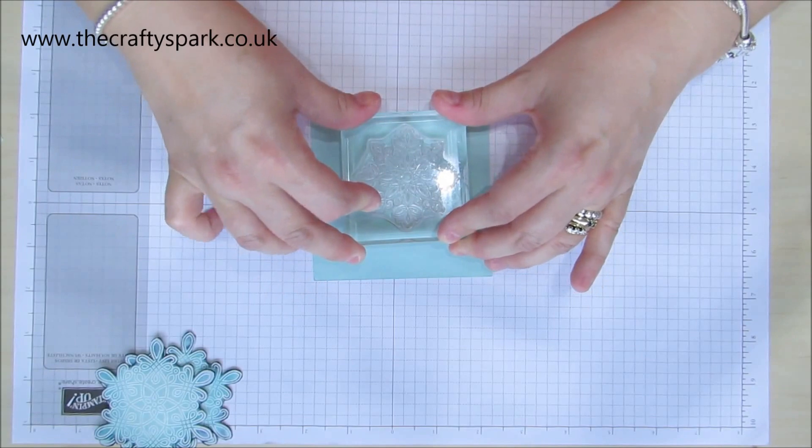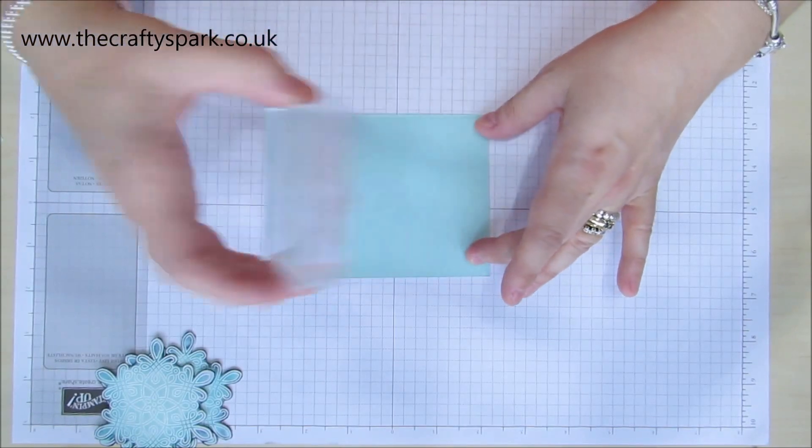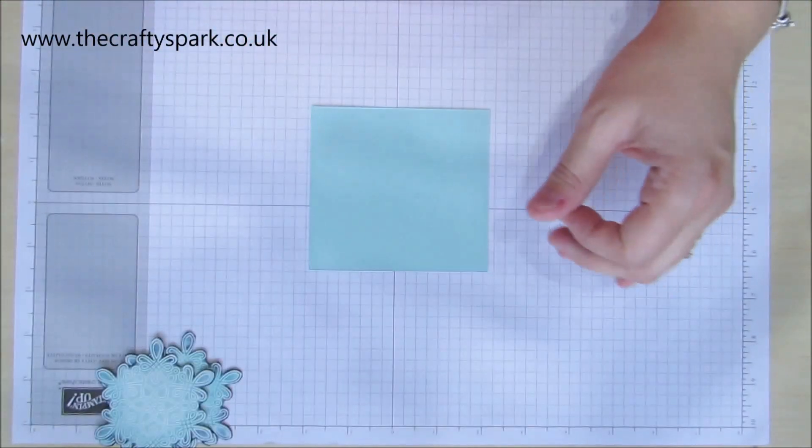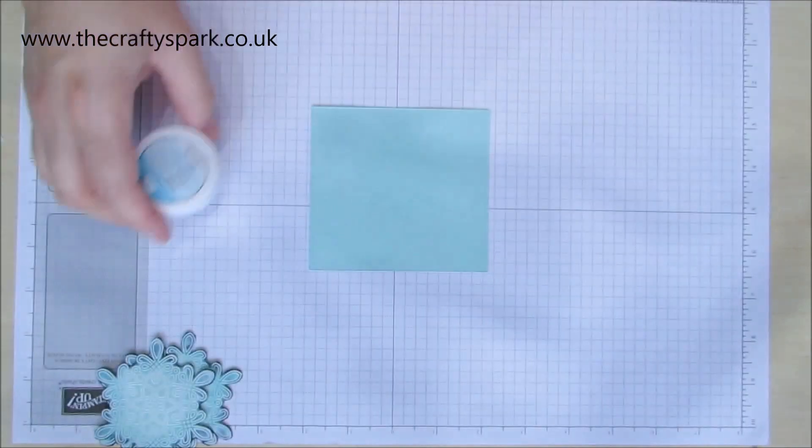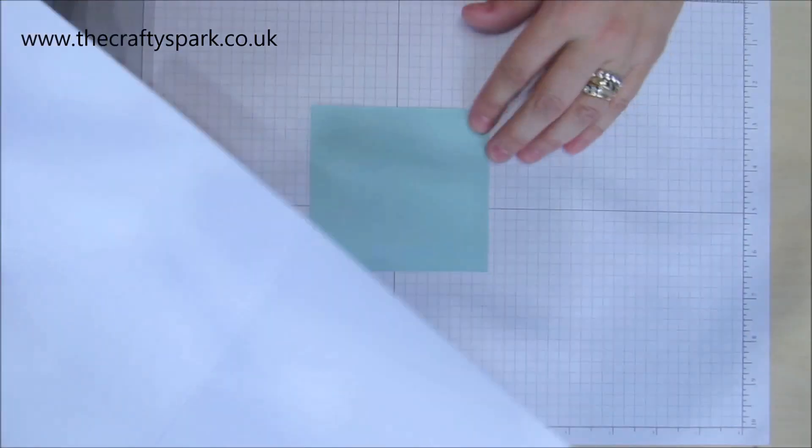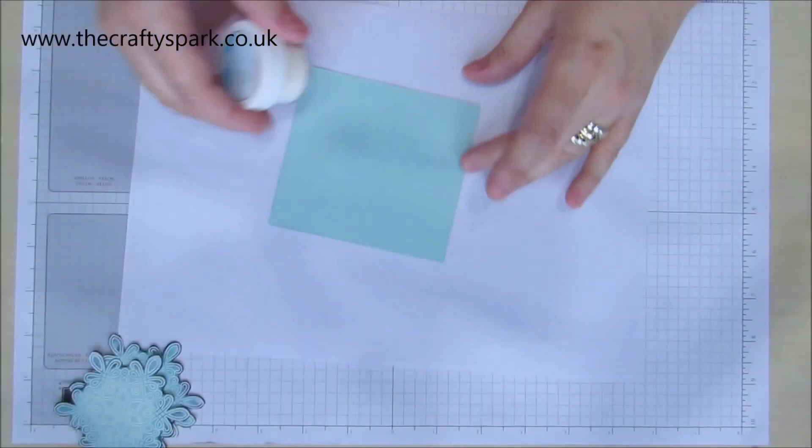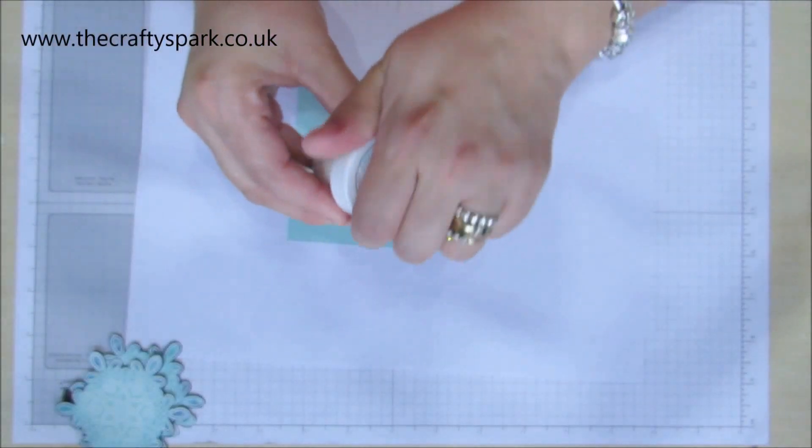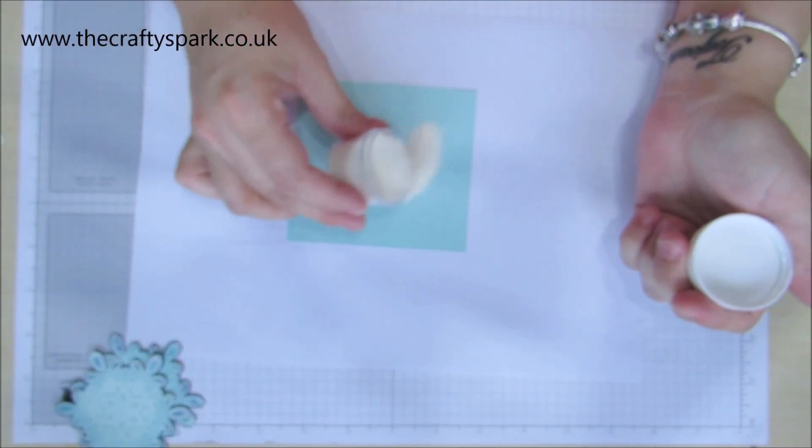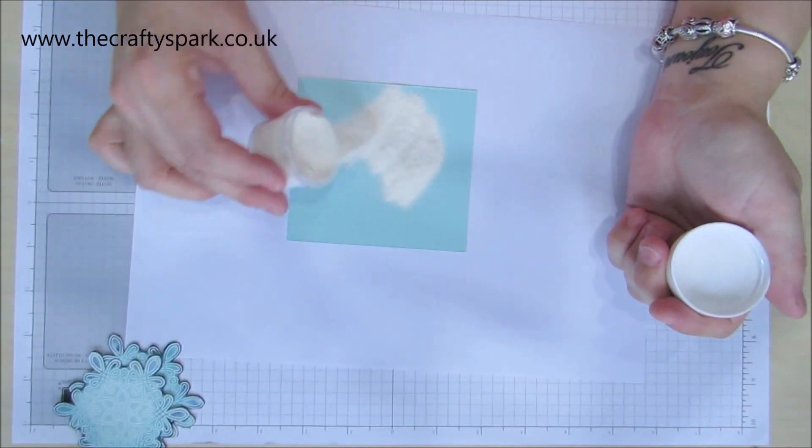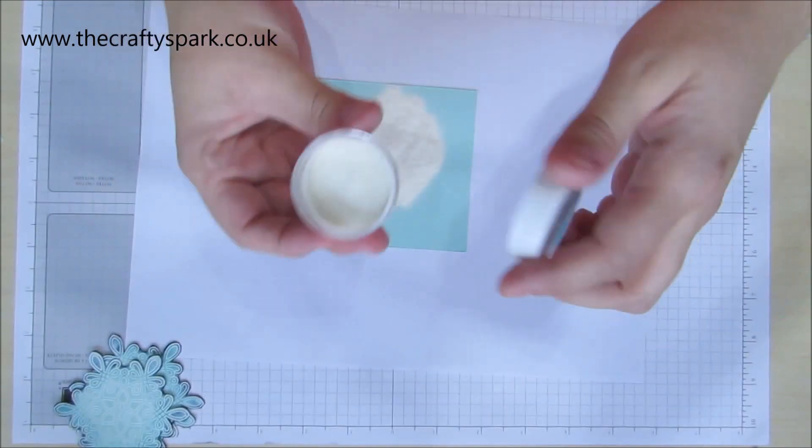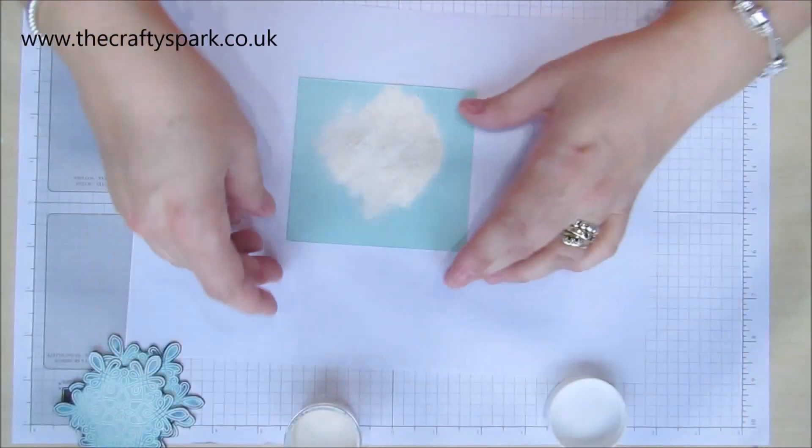So you pop it down there, push it down nice and firm, and then we want some embossing powder. Now always use some folded up paper underneath to catch embossing powder.